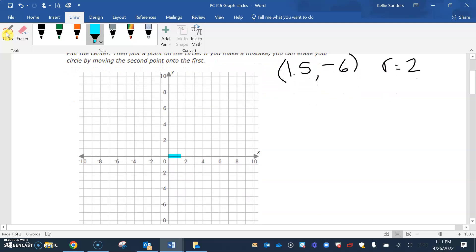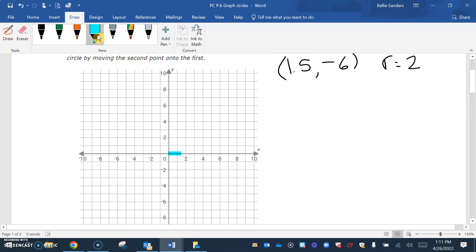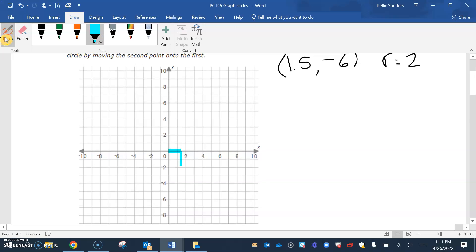I'm going to have to scoot this a little bit, and then six down. So that's where your center is going to be. You're going to put a dot there, and then once you move your cursor it's going to go around for you and make that circle. So your circle should look something like that.